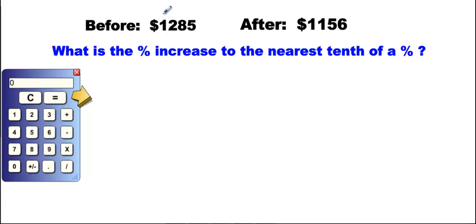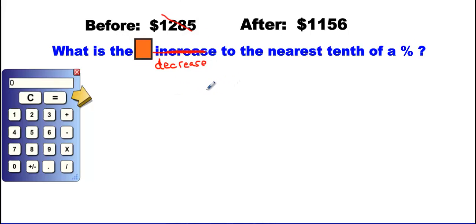In the next situation, the opposite is happening — the price is getting slashed and becoming cheaper. It's not a percent increase, it's a percent decrease. Let's cover up the percent sign and figure out: what is the decrease? How much did it decrease by? We do subtraction: big number minus small number — $12.85 minus $11.56.